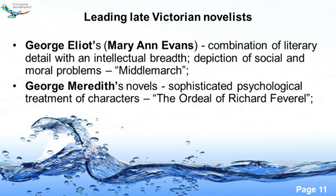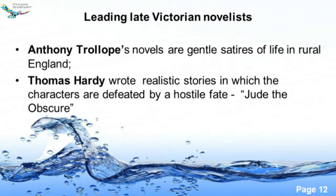For the late period, almost the beginning of the 20th century, we have four major representatives. George Eliot is the pen name of Mary Ann Evans, who wrote under the pseudonym of George Eliot. In her novels she depicted social and moral problems and tried to give some solutions to them. George Meredith and his novels with the psychological treatment of his characters, Anthony Trollope with gentle satires of life in the countryside, and Thomas Hardy with hostile fate as the major phenomenon of realization.